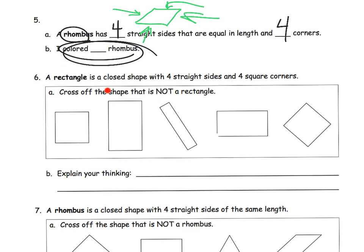Now, question six says a rectangle is a closed shape with four sides and four square corners, right? Well, we kind of talked about that up here, that a rhombus doesn't have to have four square corners. Cross off the shape that is not a rectangle. Well, let's see. This is not a rectangle because it's not closed. See, it's got a little opening there.